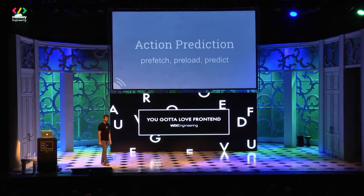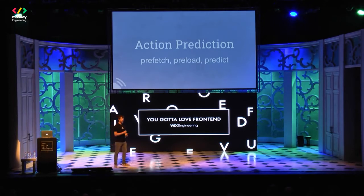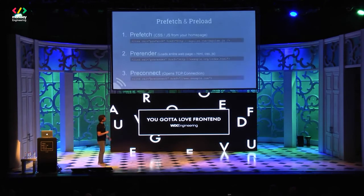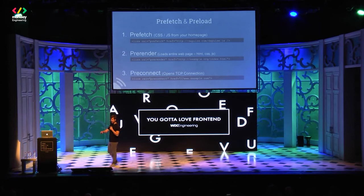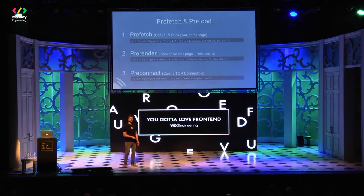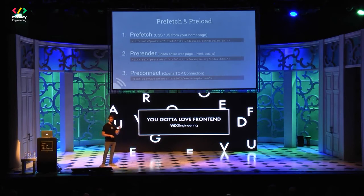Another way to achieve boom performance is action prediction — the art of predicting your users' behavior and preloading information. One way to do it, introduced in HTML5, is to use pre-fetch, pre-render, and pre-connect. Think about someone visiting your website, signing up, entering their email — then there's a whole process of going to their email client and confirming. This is precious time: you can use pre-fetch and pre-render to already render your sign-in form and your system.